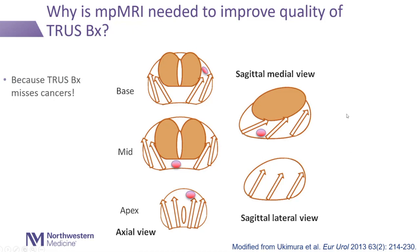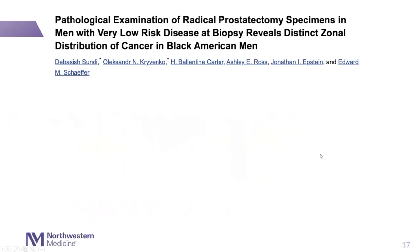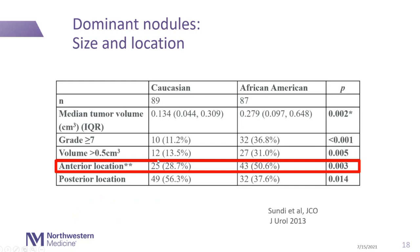Multi-parametric prostate MRI certainly improves cancer detection with the transrectal approach. This is a paper Deb Sunday and I published about 10 years ago demonstrating this phenomenon — McNeil at Stanford first showed this. We showed in our cohort that in a pre-MRI era, individuals of African ancestry had much higher rates of anterior tumors than Caucasian individuals.